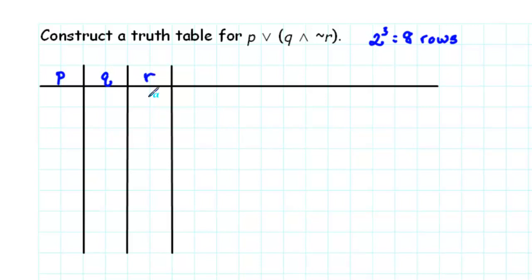For R, we'll alternate true-false one at a time. For Q, we'll alternate true-false two at a time. And for P, we'll alternate true-false four at a time.